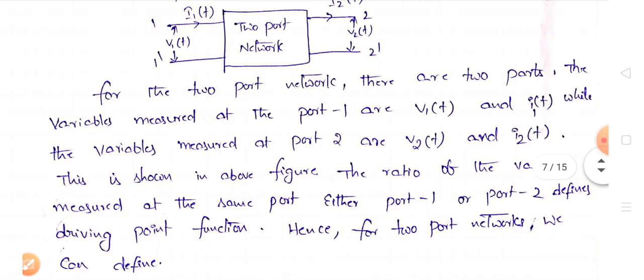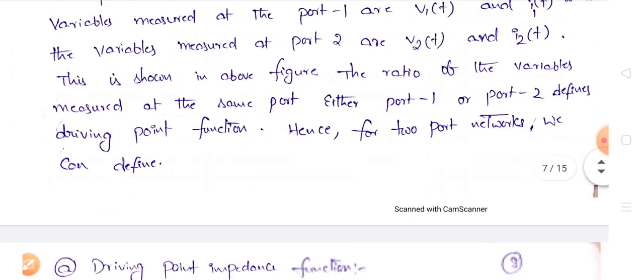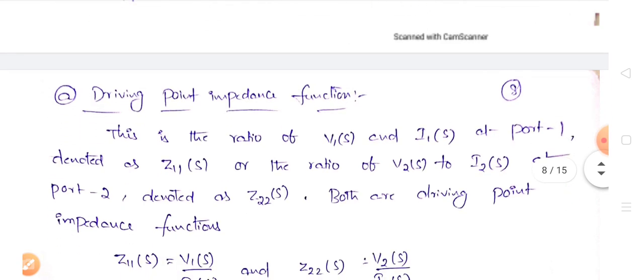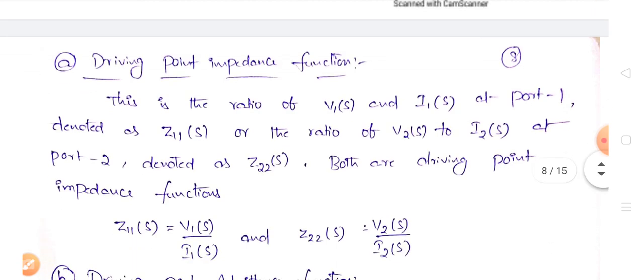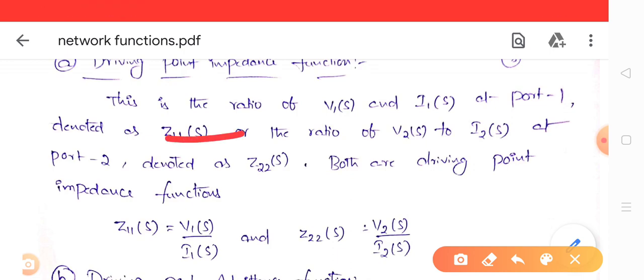From the figure, whatever the ratio of the same variable at the same port is the driving point function. For the first port, V1(t)/I1(t) is the voltage-to-current ratio. The driving point impedance is defined as V1(S)/I1(S) at the first port, or V2(S)/I2(S) at the second port. The driving point impedance at port one is Z11(S), and at port two is Z22(S).